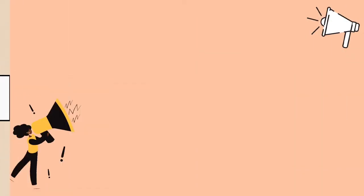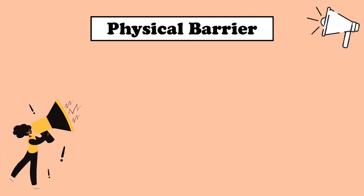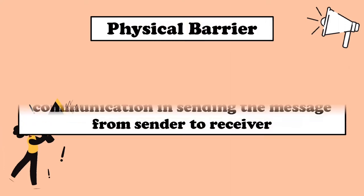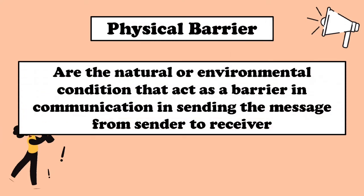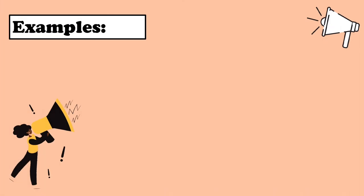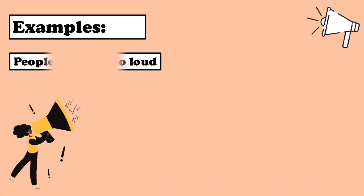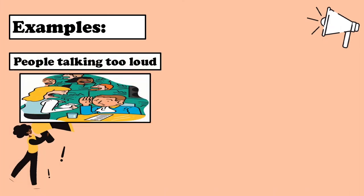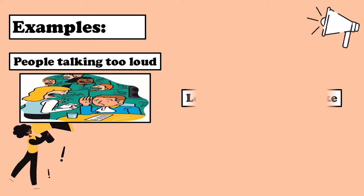The first communication barrier is called the physical barrier. Physical barriers are the natural or environmental conditions that act as a barrier in communication in sending the message from sender to receiver. Examples of physical barriers are people talking too loud and loud sound from a karaoke.